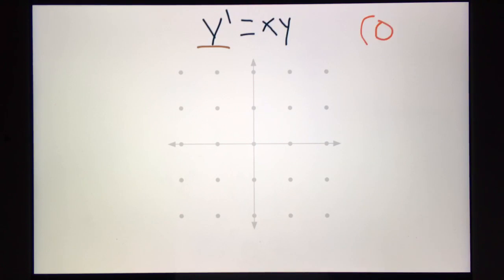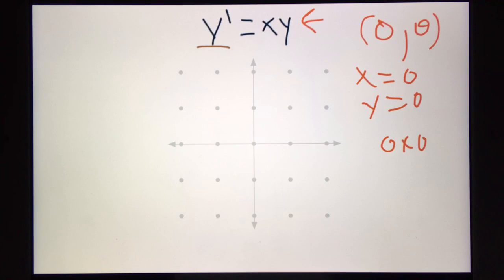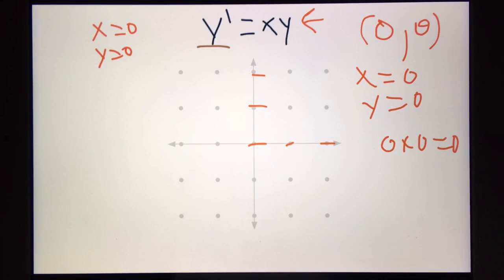Let's start with an easy point: 0, 0, the origin. Since the x value equals 0 and the y value equals 0, we plug it in here. 0 times 0 equals 0, so the slope would be 0. Now, if you look at this specific derivative, you'll notice that whenever x equals 0 or y equals 0, the derivative or slope will equal 0. And these are called equilibrium points, or when you draw them in a line, a line of equilibrium. You always want to find these points first, because they are the easiest points to find and will give you a basic idea of what your slope field will look like.